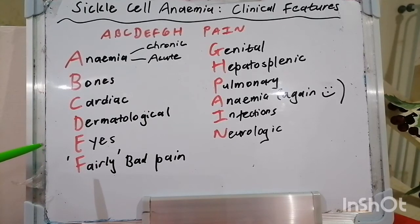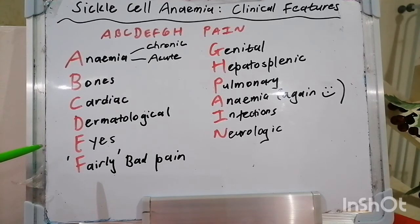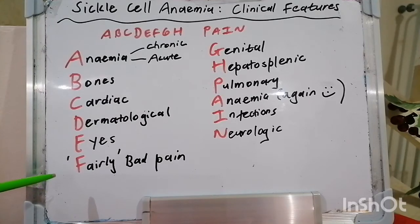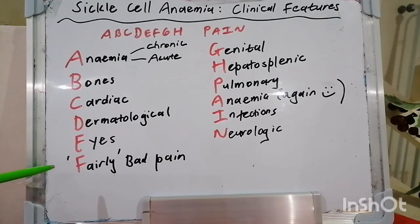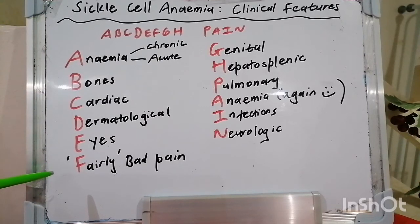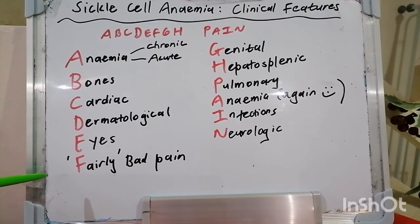E is for eyes, where we have proliferative retinopathy, retinal artery occlusion, retinal detachment, and hemorrhage. F stands for fairly bad pain, referring to pain crisis which involves the back, chest, extremities, and abdomen, and may be associated with fever, swelling, tenderness, tachypnea, hypertension, nausea, and vomiting. It may be precipitated by weather changes, dehydration, infection, stress, menses, and alcohol. It is important to exclude these precipitants in patients who have pain crises. Multi-organ failure may develop with severe pain episodes.